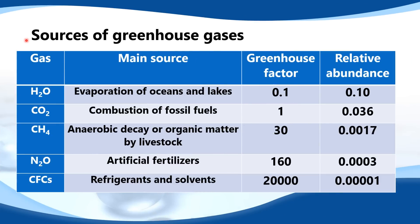Next we look at the sources of the greenhouse gases. Starting with H2O, which is water, the main source is evaporation of oceans and lakes. Next is CO2, carbon dioxide — the main source is combustion of fossil fuels. Next is CH4, which is methane, and the main source is anaerobic decay of organic matter by livestock.